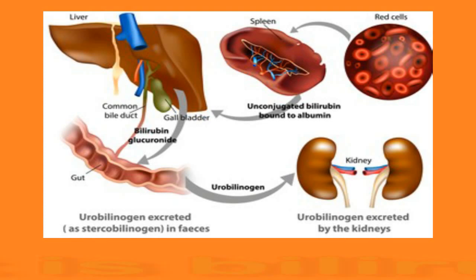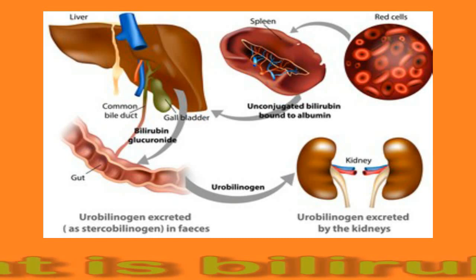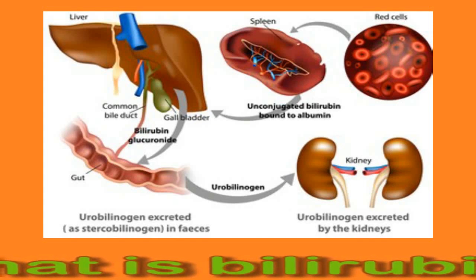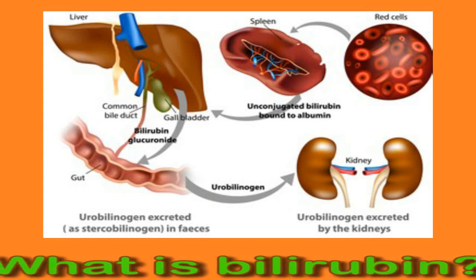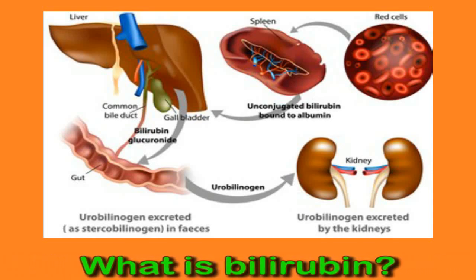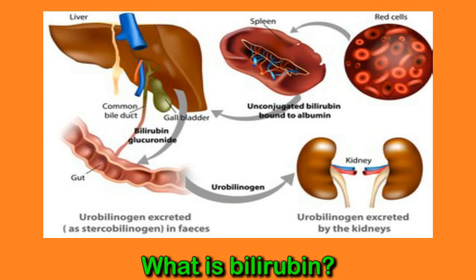The breakdown of red blood cells in the body produces bilirubin. The bilirubin travels to the liver and is stored in the bile duct. The body ultimately expels bilirubin in stools. Bilirubin is brown and yellow in color, and it is this pigment that makes feces brown. Red blood cells have a lifespan of around 120 days and renew continually.